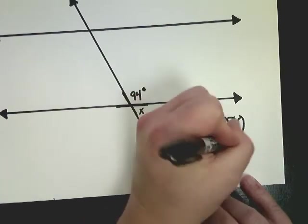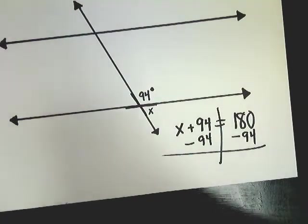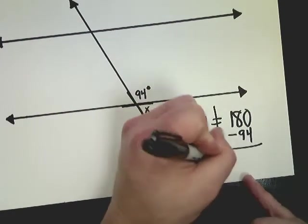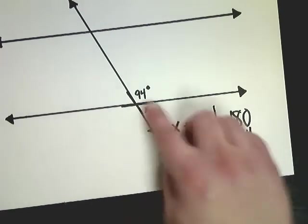Subtract 94 from both sides. So my final answer, or the value of x, is x equals 86 degrees. And that's because they share a side.